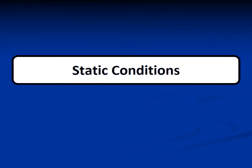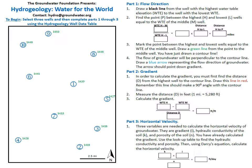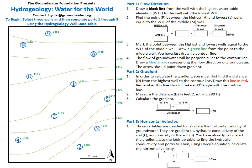We are first going to go through the activity in static conditions, meaning there is no human impact. The first step is to label the static elevation of each well, which you can find in the well data log. Once you have labeled all of your wells, you can begin drawing contour lines for your water table elevations. I have already drawn the contour line for 1,435 feet. When drawing contours, make sure none of your lines cross each other, as this is not physically possible. Draw contour lines at intervals of 5 feet; you should have contour lines from 1,420 feet to 1,450 feet. You cannot draw contours for 1,415 or 1,455 feet because you do not have enough information.